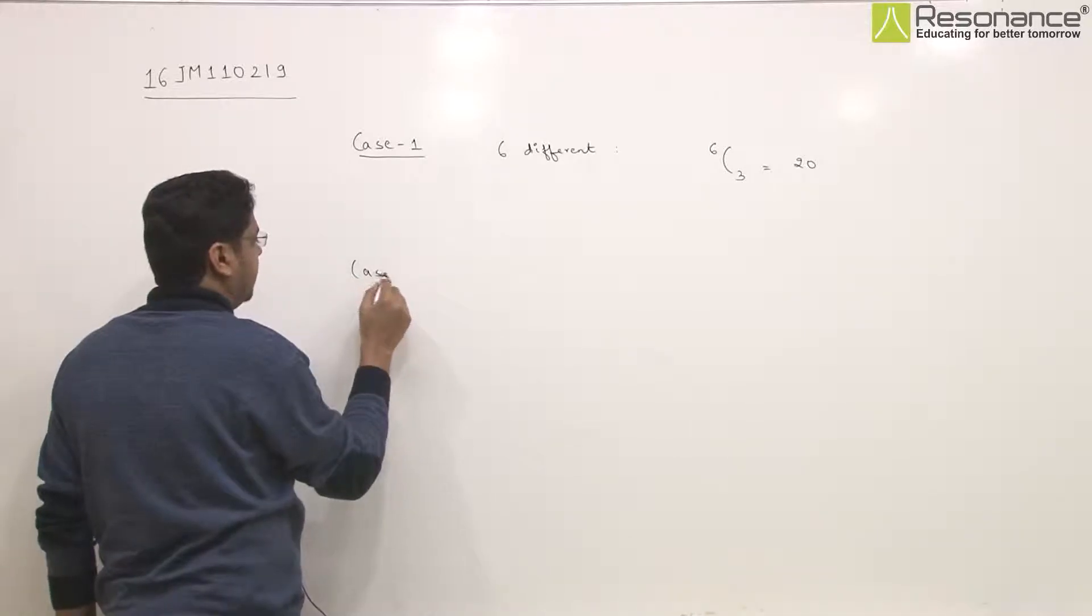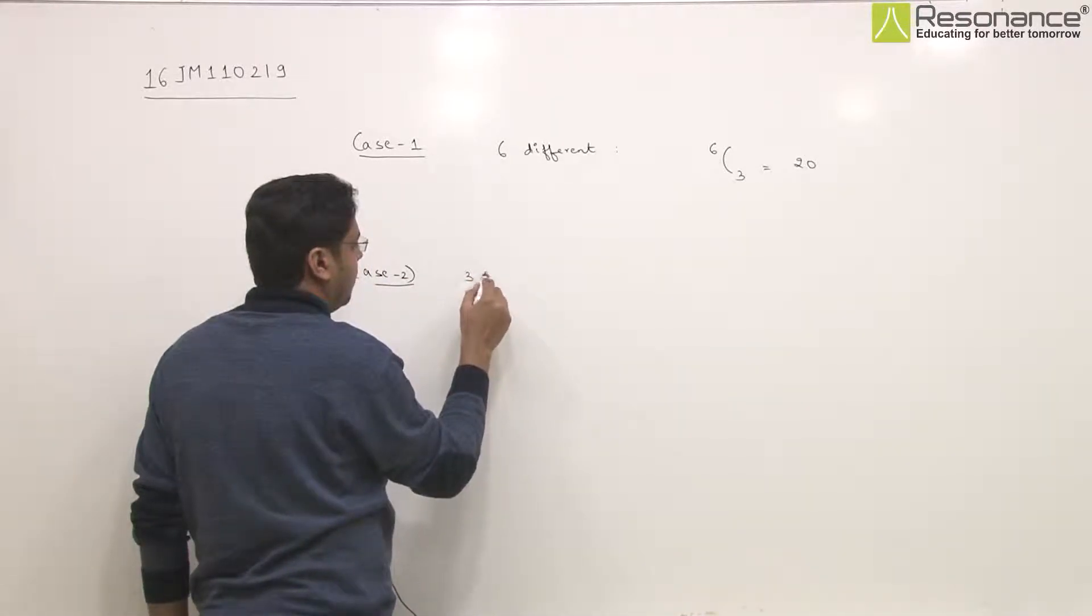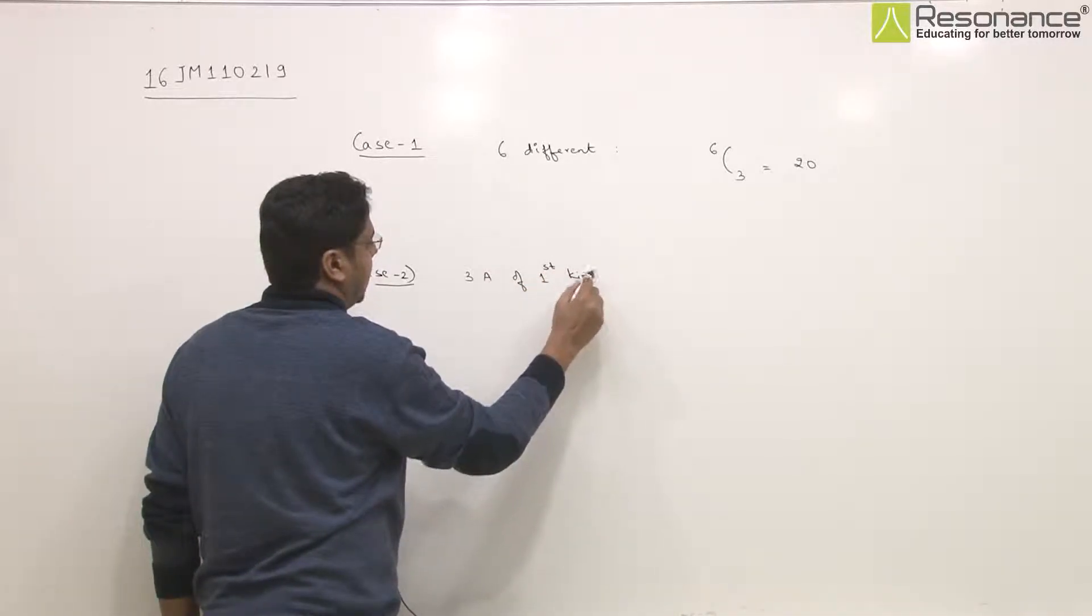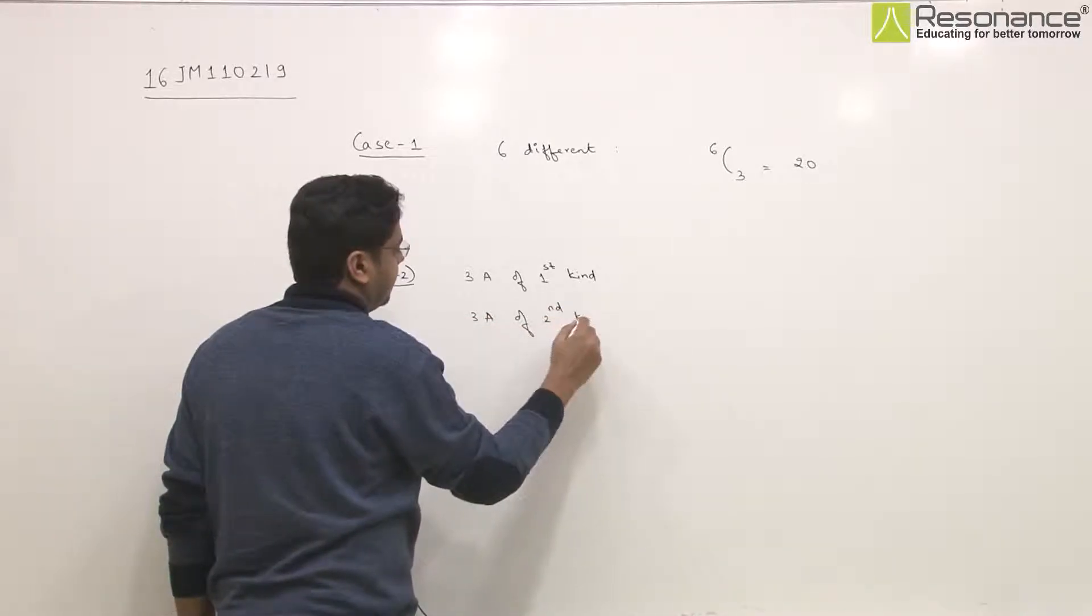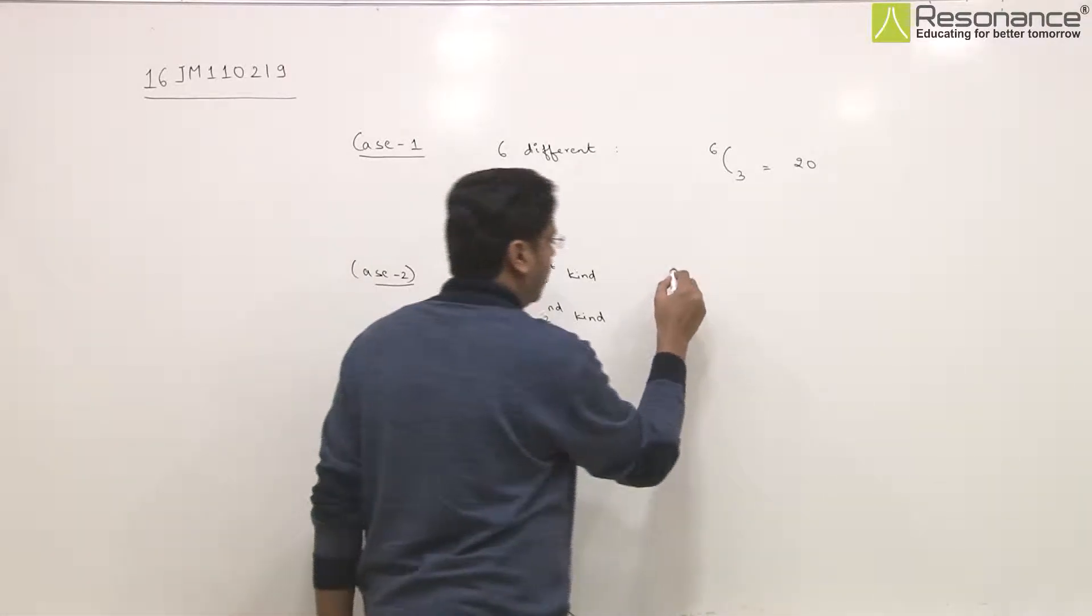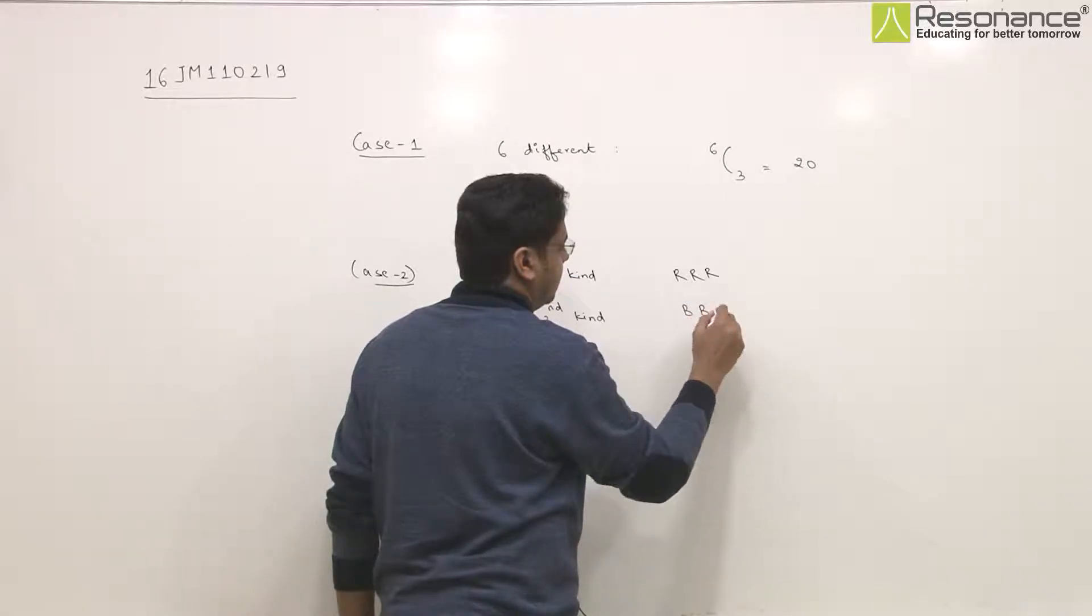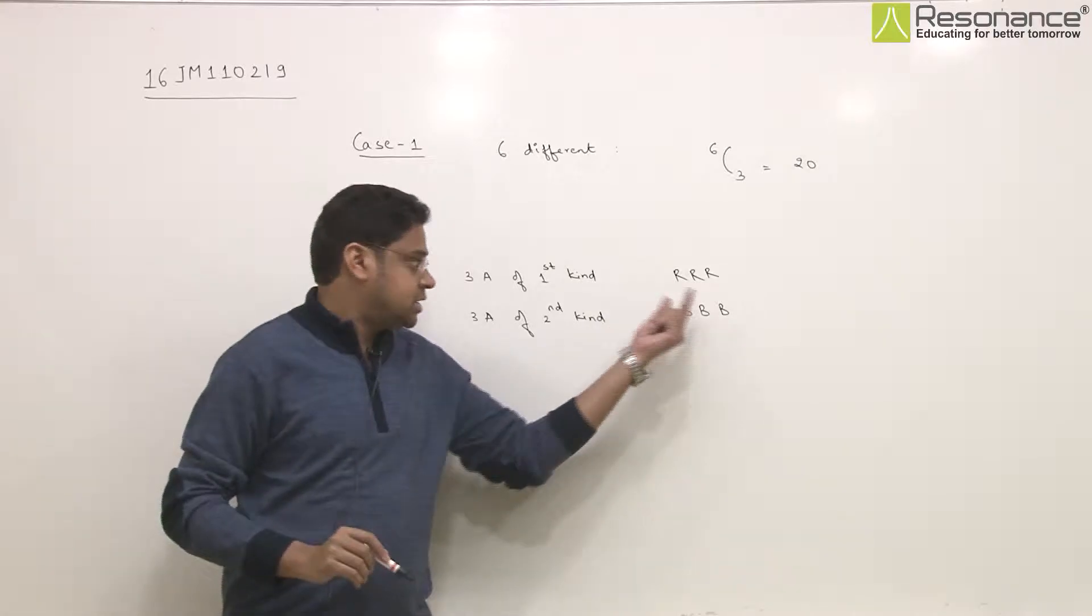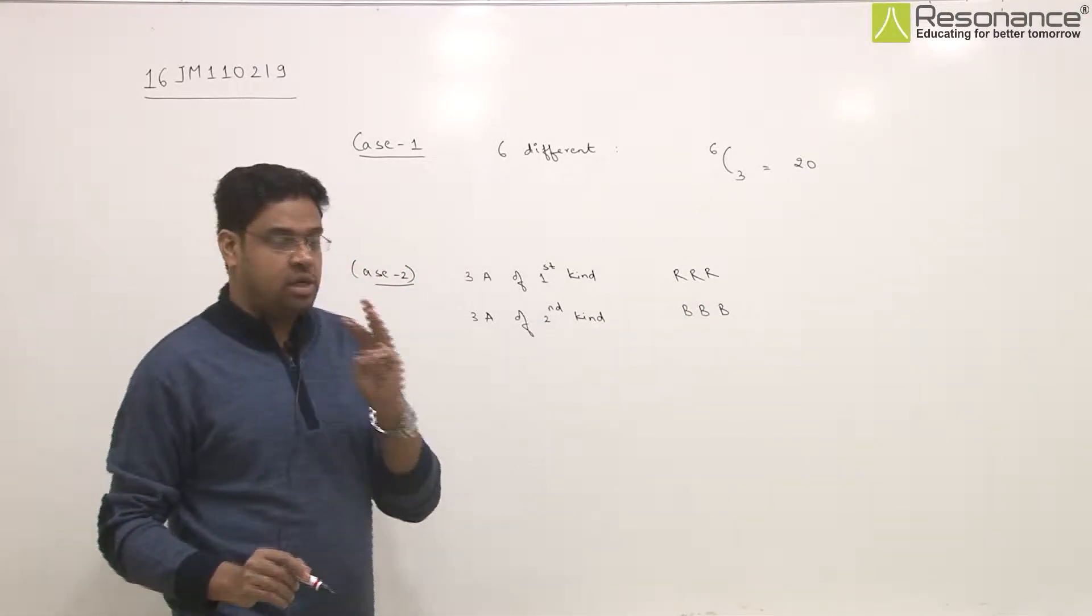Or in case 2, they have given that in the bag there are three alike of one kind and three alike of second kind. For example, take a bag where there are 3 red balls and 3 black balls - three alike of first kind and three alike of second kind. And again, we have to draw 3 balls from the bag.